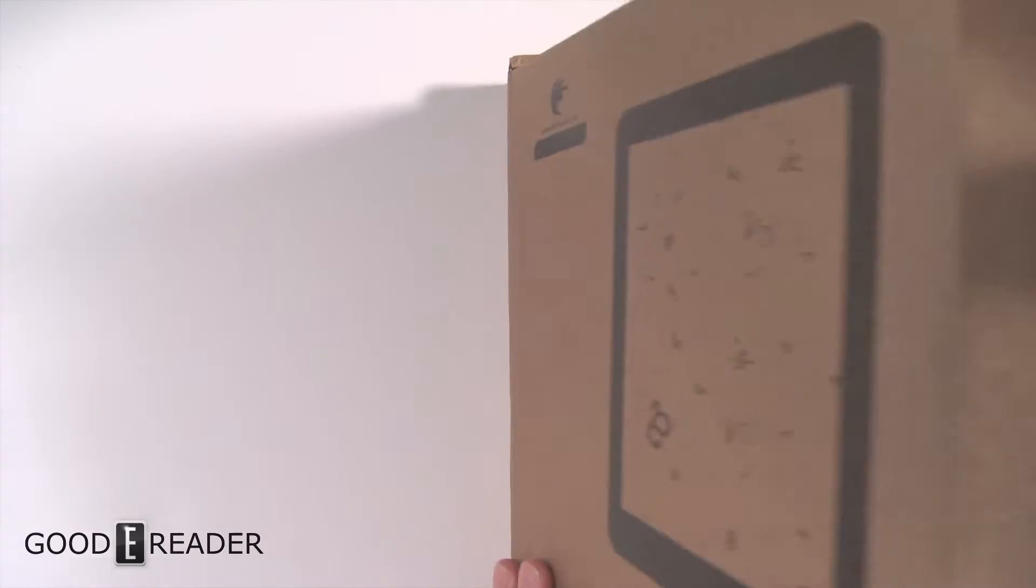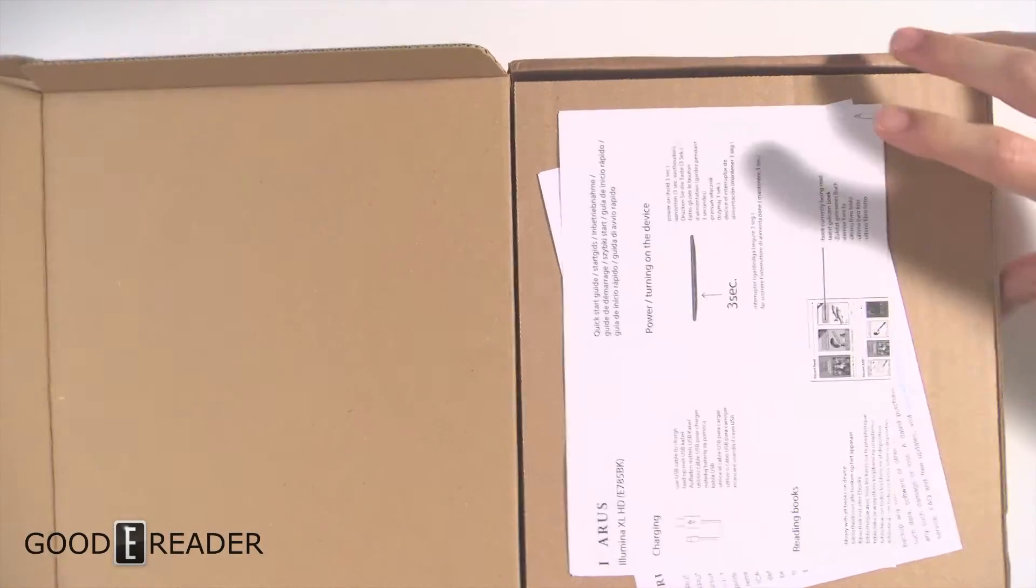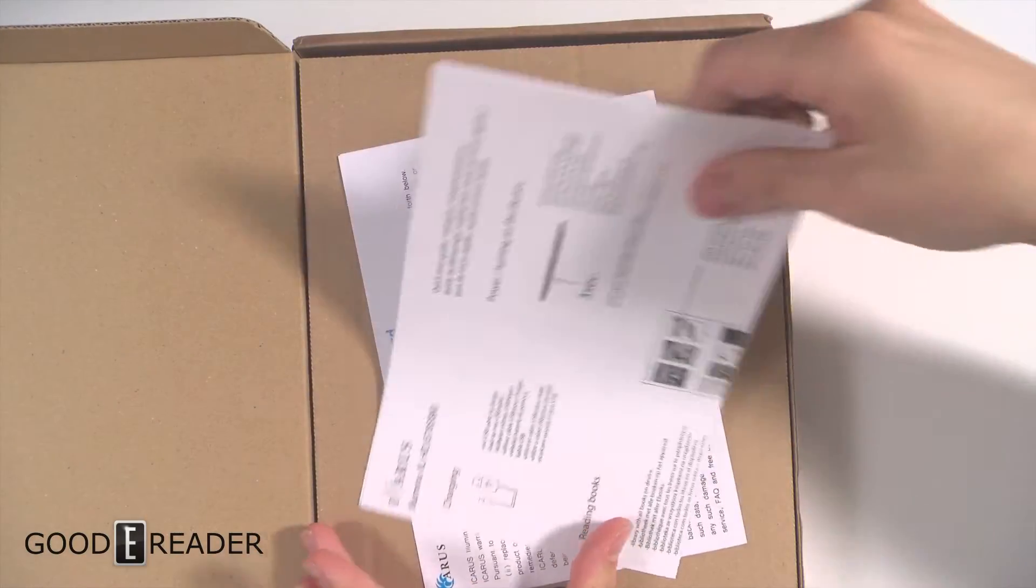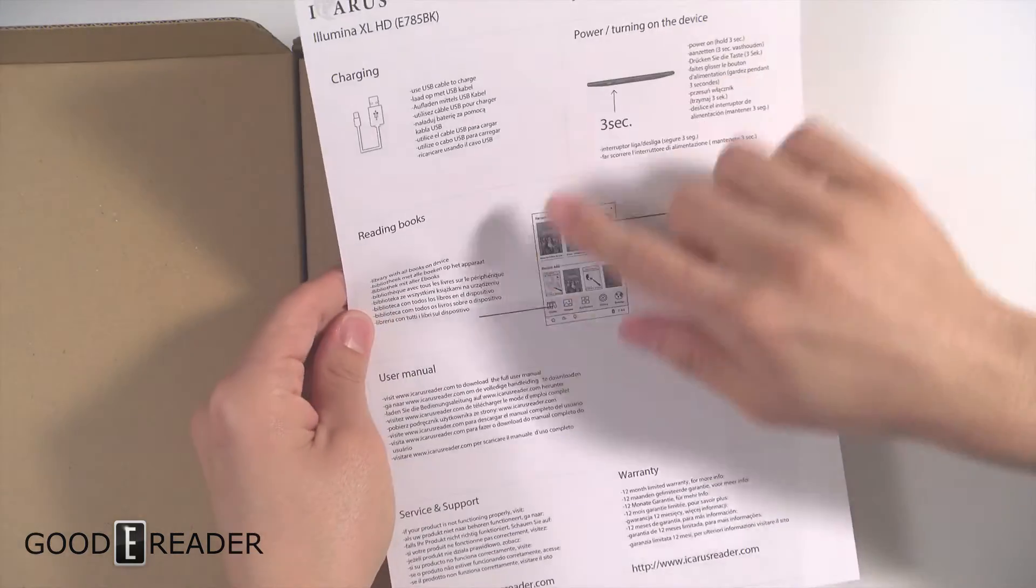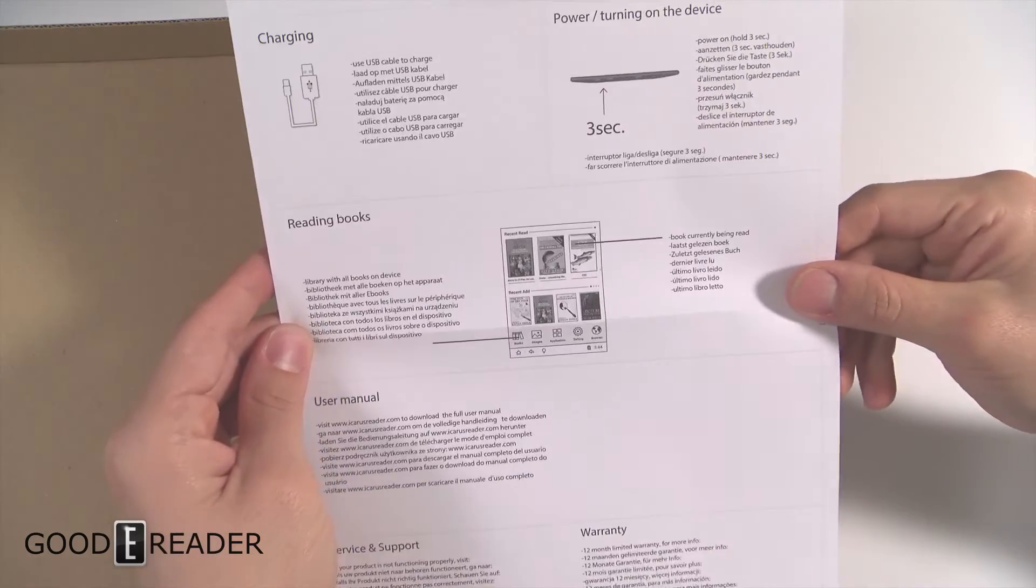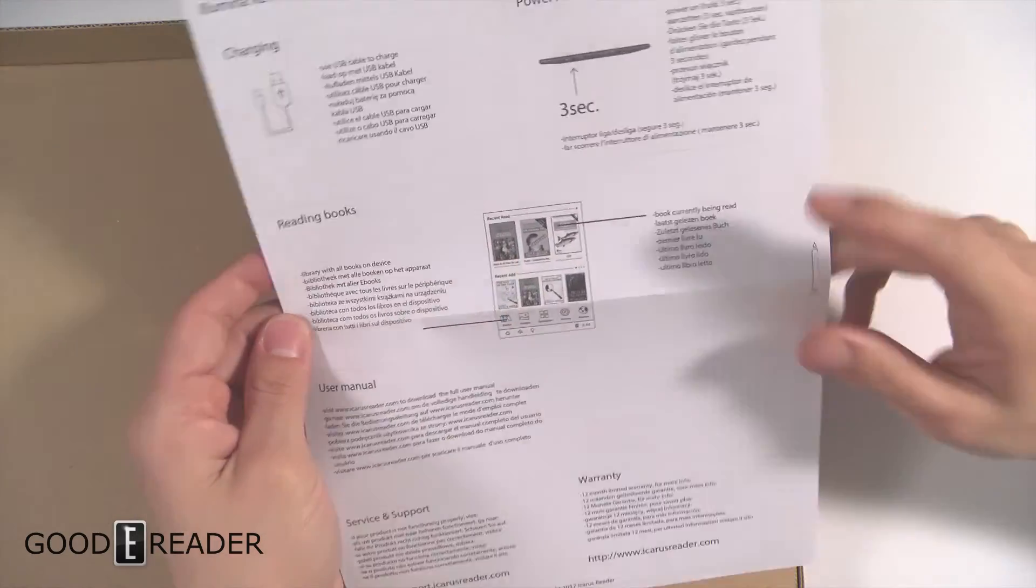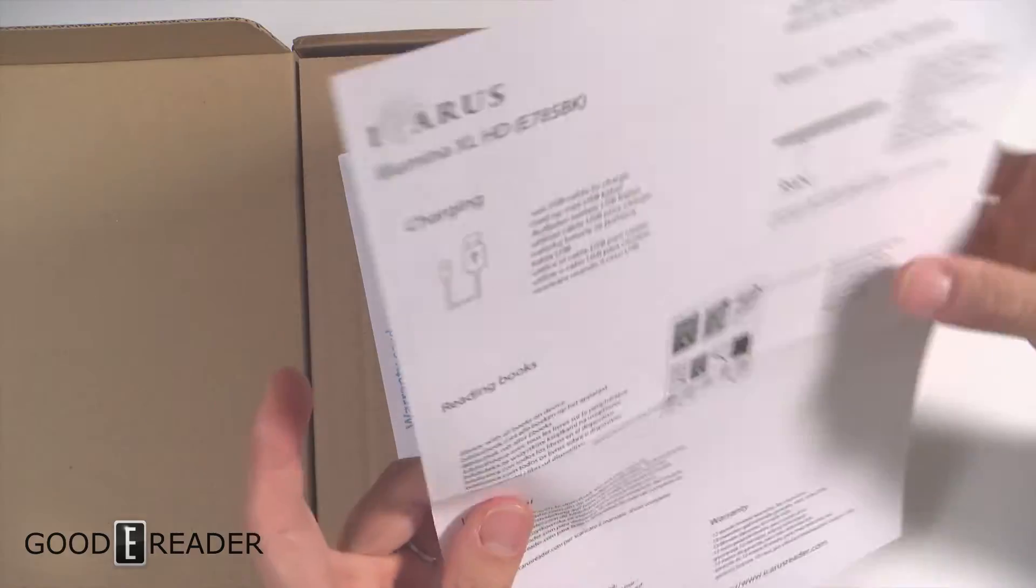This is what you're going to get if you order this device. On the inside you get some documentation that hits you right in the face. It tells you exactly what you need to know about turning it on, a couple things about reading books, and a user manual single-side printout.